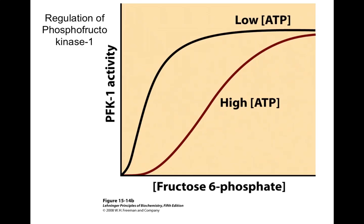PFK1 is activated by AMP, reflecting low ATP levels, and also activated by fructose-2,6-bisphosphate. It's inhibited by citrate, which is the product of the citric acid cycle — if we have lots of energy backed up, why create more? In summary: if AMP is high (low ATP), we do glycolysis; if AMP is low and ATP is high, we do gluconeogenesis.